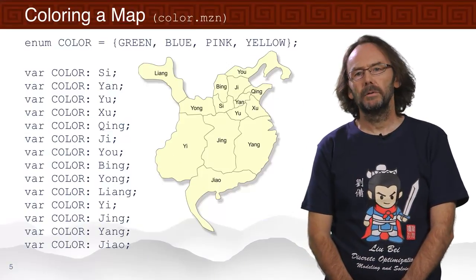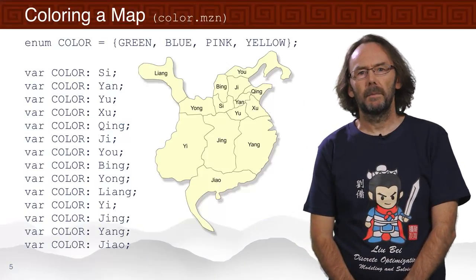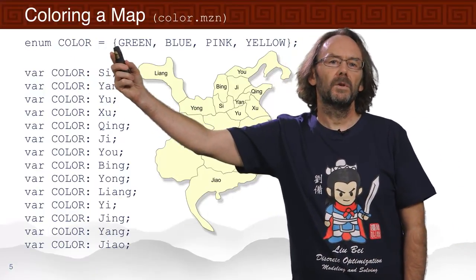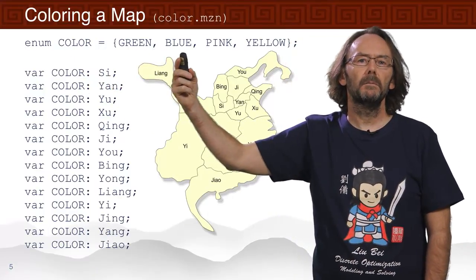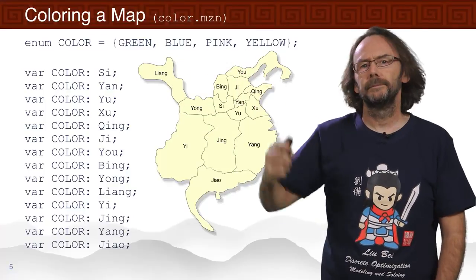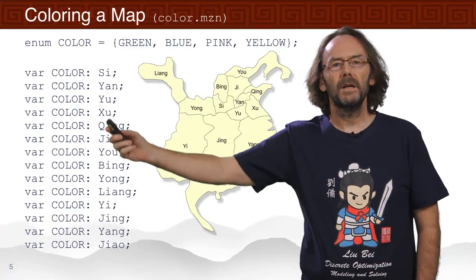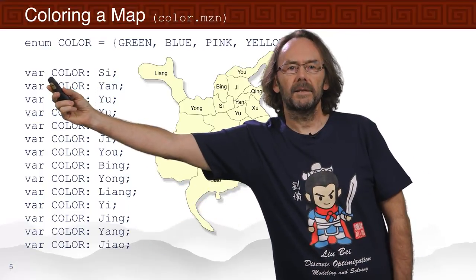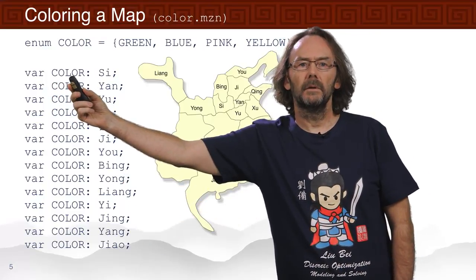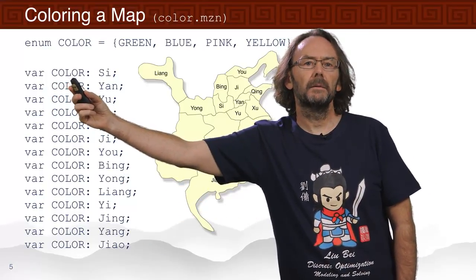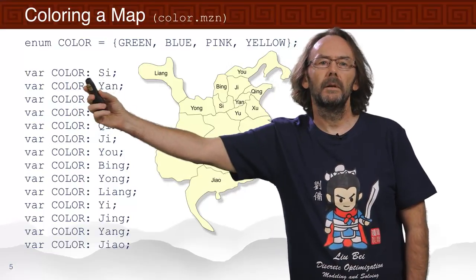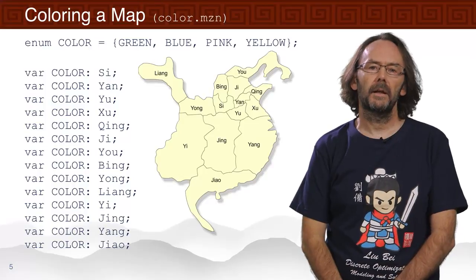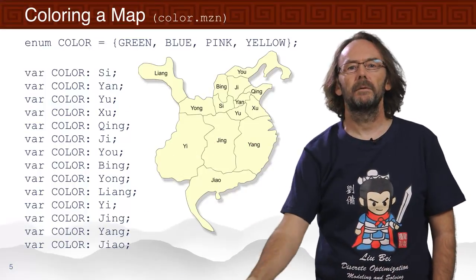Let's look at a MiniZinc model to colour this map. We have an enumerated type `colour` made up of four different colours: green, blue, pink and yellow. Each of the different provinces is declared as a variable of this enumerated type. So province Siu — we're going to decide which colour to assign to that province, and the same for all the rest of the provinces.